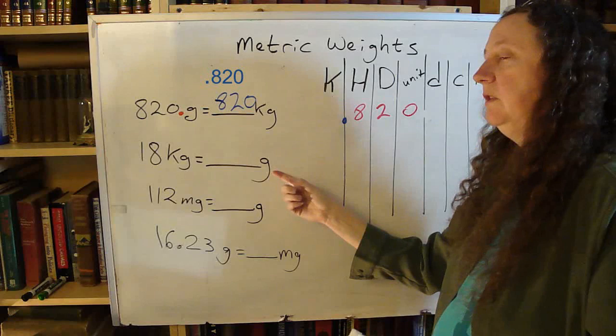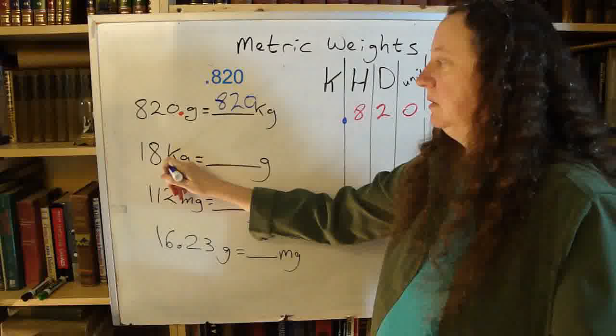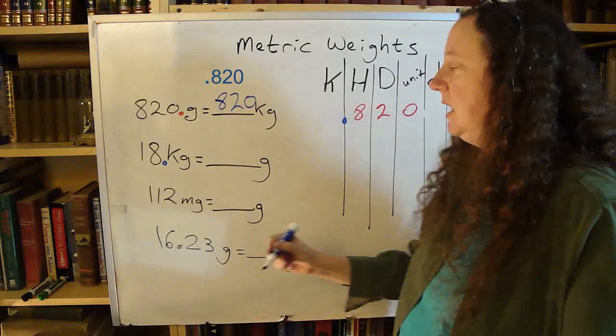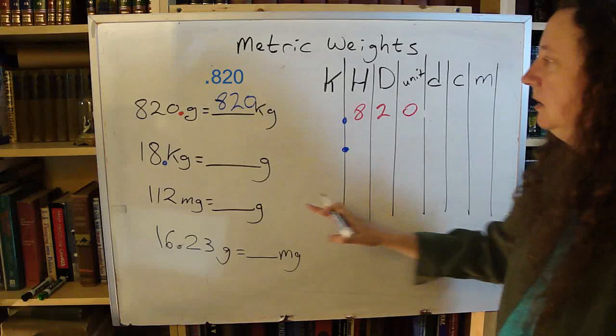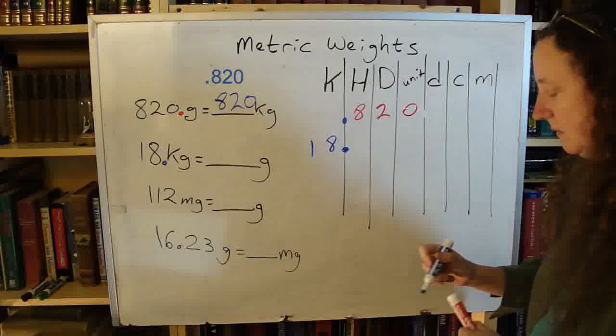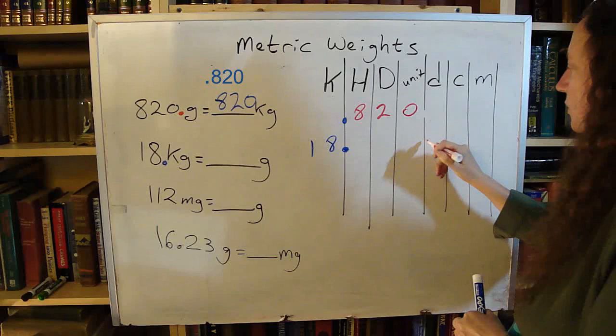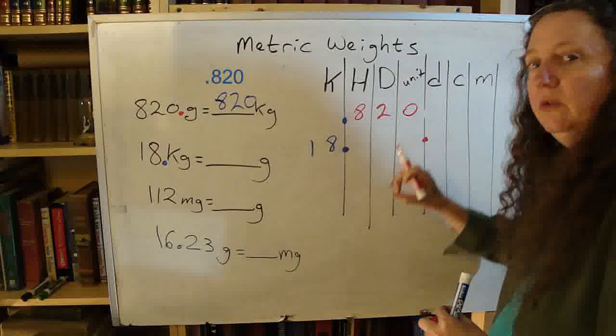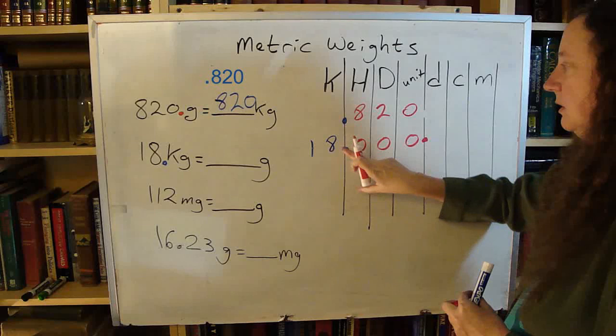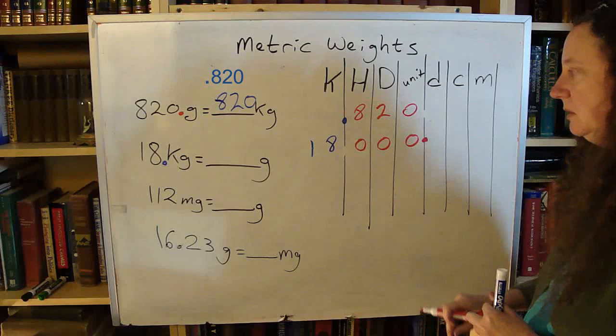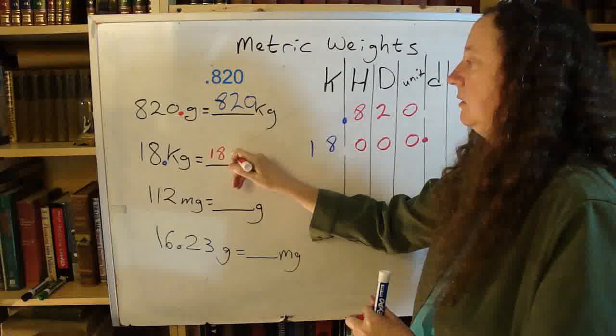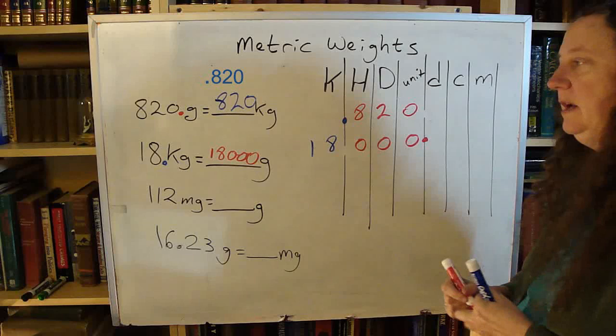If you are given kilograms and you want to find grams, find your decimal point. Because we have the k here, we want that decimal to be at the end of the k column. There's my k column. Fill in my numbers. I want my new decimal point to be at the g column - the gram, the unit. There's my unit, new decimal point goes here. I need to fill in zeros to hold that decimal point in place and get rid of my old decimal point. I now have my answer: 18,000. So 18 kilograms is 18,000 grams.